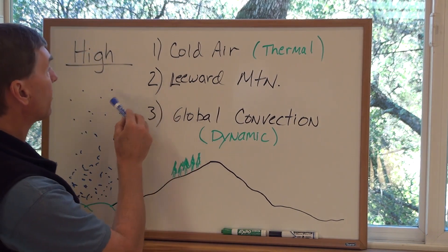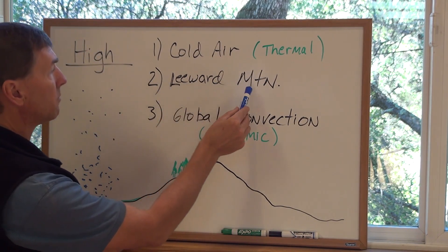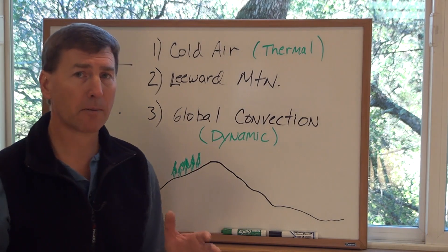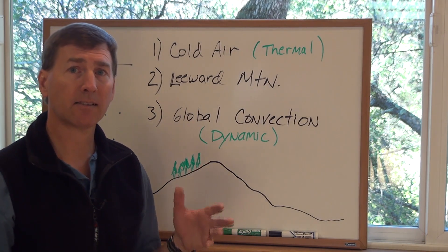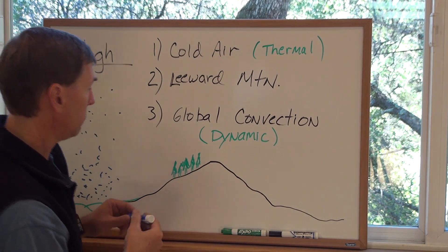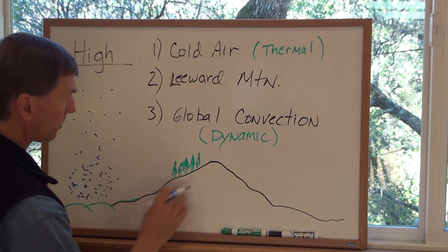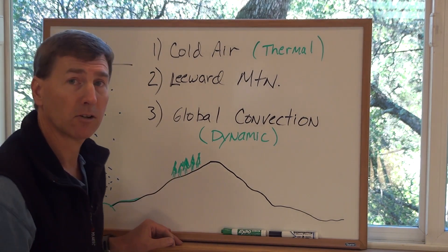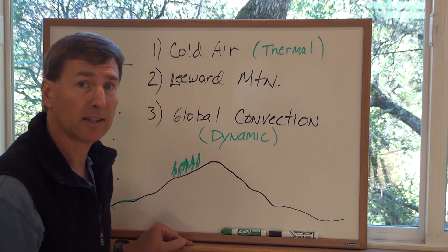Another way that air can sink is on the leeward of a mountain. Now the leeward of the mountain is the backside of the mountain. In the case here in northern California, we have the Sierra Nevadas, so I drew the Sierra Nevadas. It goes up to about ten thousand, fourteen thousand feet in the south.